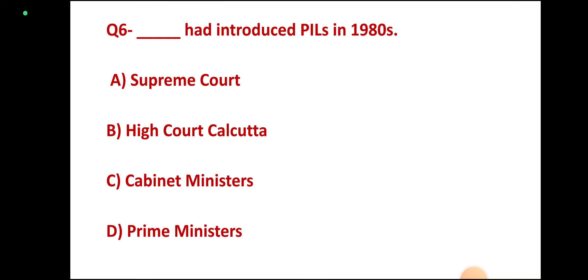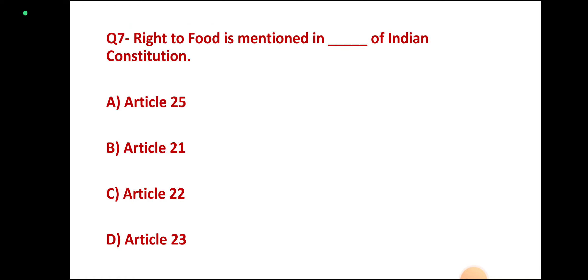Question 5: Dash faced a heavy drought in 2001 — Jammu Kashmir, Rajasthan, Karnataka, or Tamil Nadu? Correct answer: Karnataka. Question 6: Dash can appoint deputy — Cabinet Ministers, Prime Ministers? Correct answer: Supreme Court.